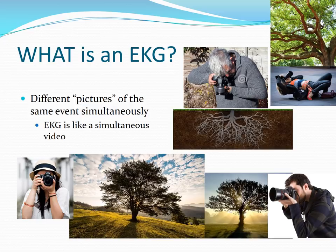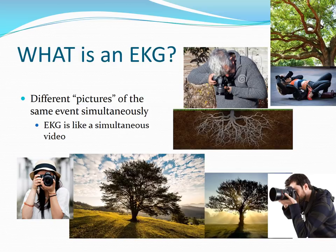So what is an EKG or ECG — these terms are used interchangeably. Basically we're talking about a number of different pictures of the same heart from different angles simultaneously. An example using a tree might make it easier: imagine a bunch of different photographers taking pictures of the same tree at the same point in time, but all positioned a little differently — one laying down looking up at the branches, another facing down looking at the roots, one facing the front, another taking a picture at the back of the tree.